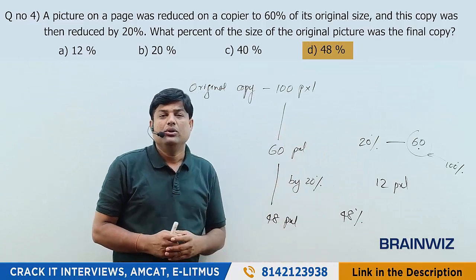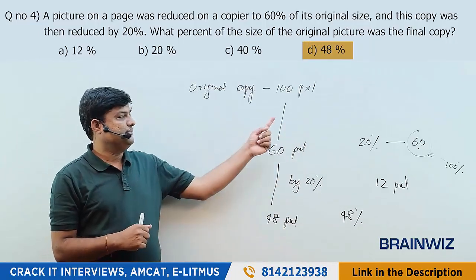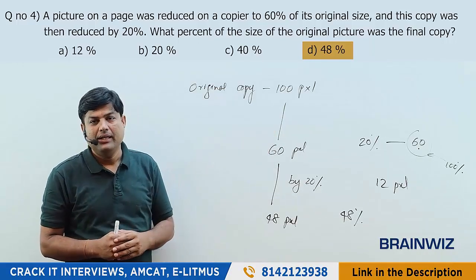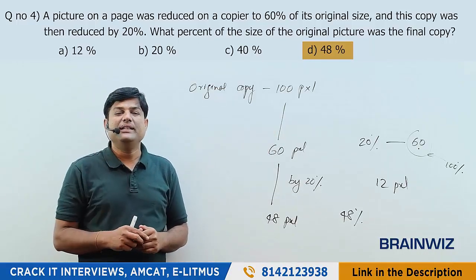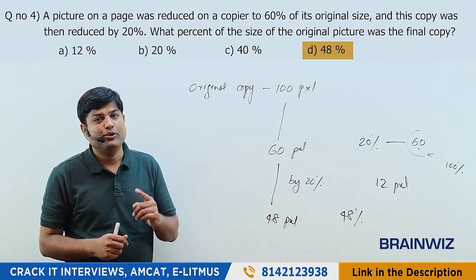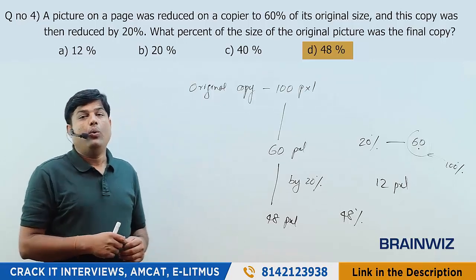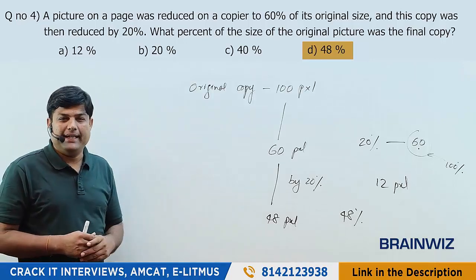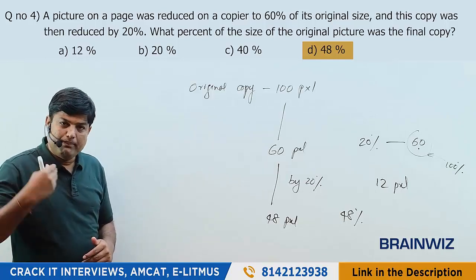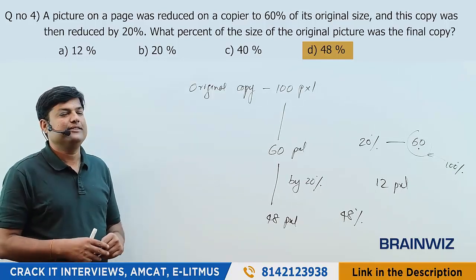The original copy was 100 pixels and it has gone down to 48 pixels. So the final copy is 48% of the original size. We got this easily because we used the concept of 100. You must also know mental calculations to solve these quickly.